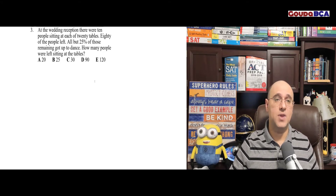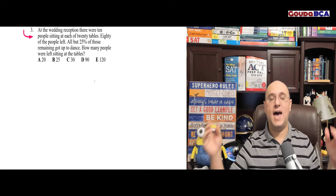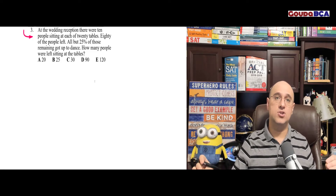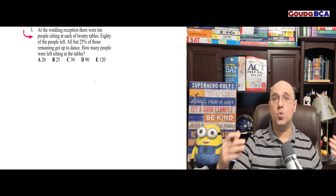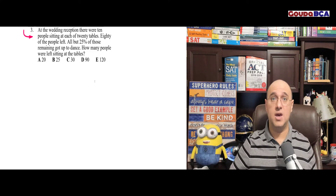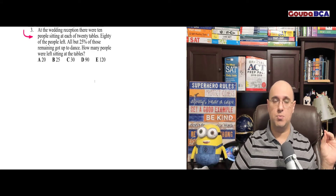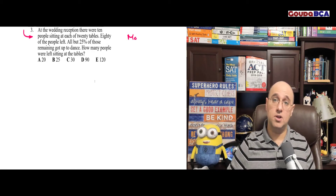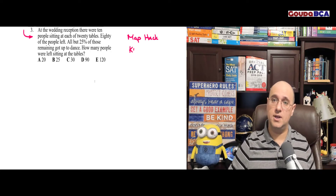Let's do number three. It's a long question with lots of words, so we have to use our keywords hack. We need to read carefully and draw our map as we read the question. What I would typically do is read this question once quickly, then read it one more time slowly and draw my map the second time. We're going to use our map hack, our keyword hack — and another important hack here is to use our visualize hack.